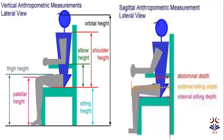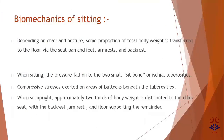The different anthropometric measurements while a person is sitting include: patellar height, thigh height, elbow height, shoulder height, and orbital height — these are vertical measurements. The lateral/sagittal view includes abdominal depth, arm-extending sitting depth, and internal sitting depth.